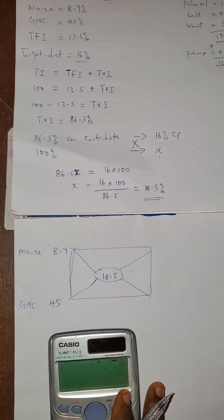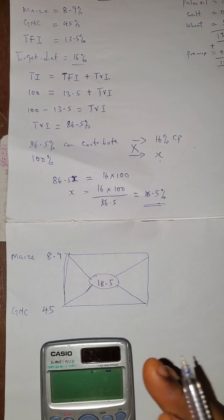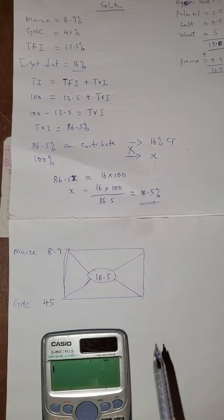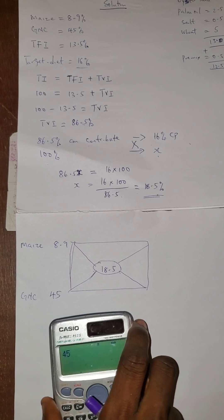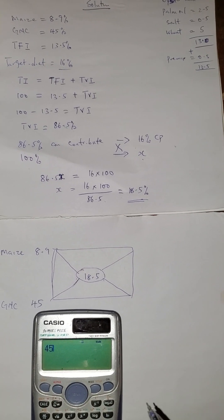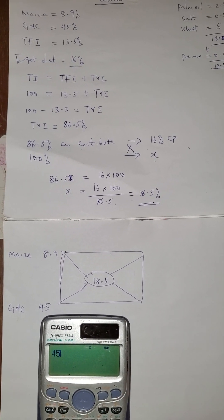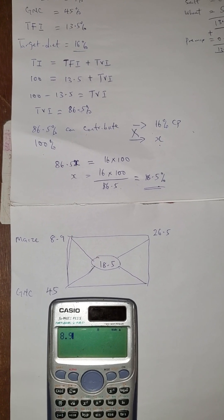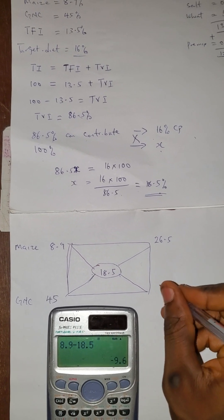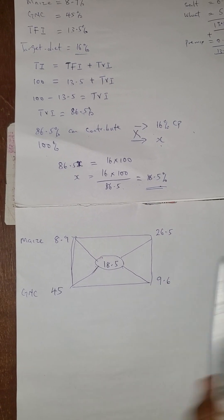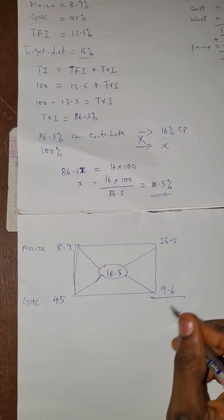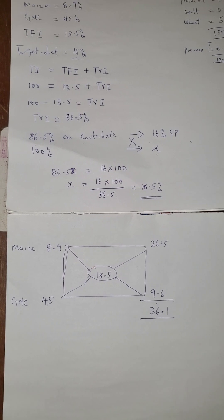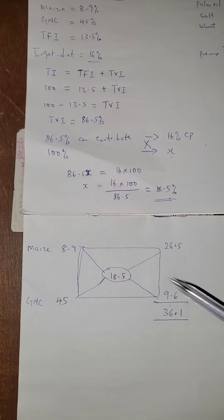You must have watched the previous two methods — the previous two aspects — before coming to this third aspect. Now applying the Pearson Square: GNC 45 minus new target 18.5 gives 26.5. Maize 8.9 minus 18.5 gives negative 9.6 — but as I told you, even if you get a negative, you neglect it and take 9.6. Then add these two together: 26.5 plus 9.6 equals 36.1.